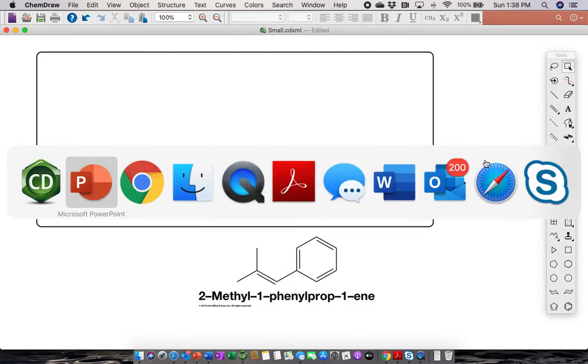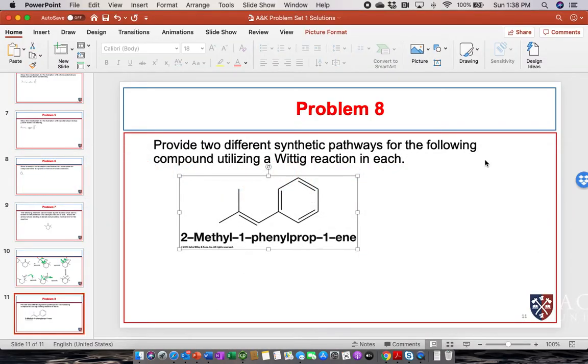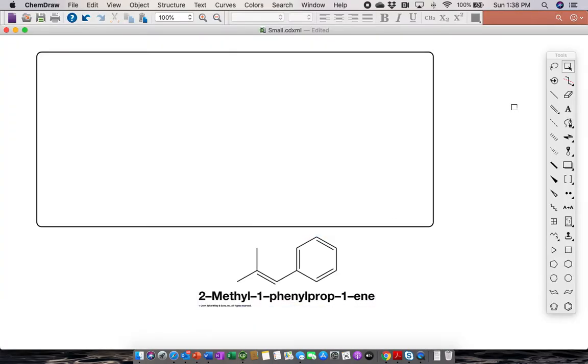I need a ketone. Let's go back into PowerPoint so I can do some drawing. I need a ketone. That can be my ketone. My ketone could be acetone. And if that's the case, this other part has to be my phosphorous ylide.